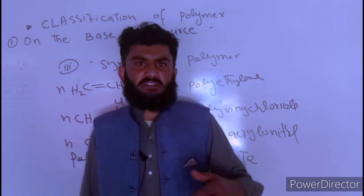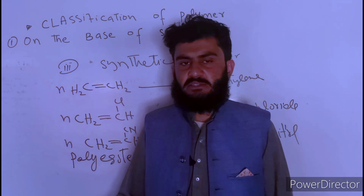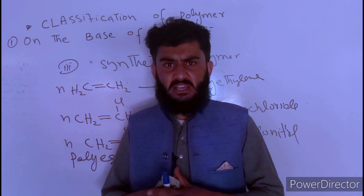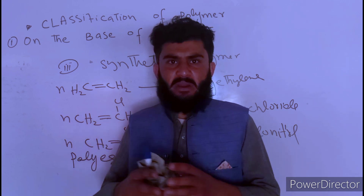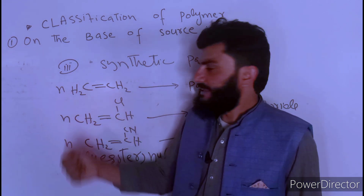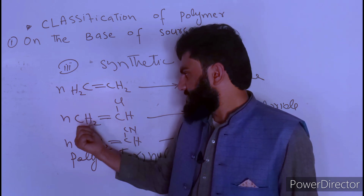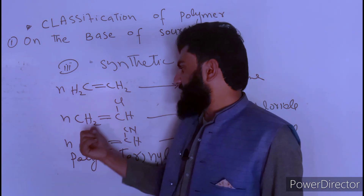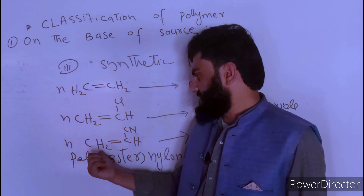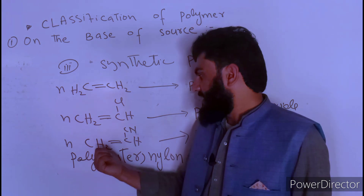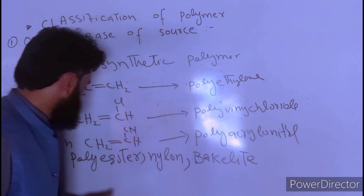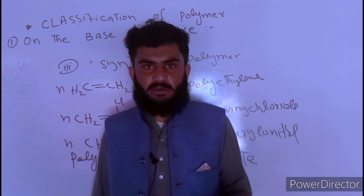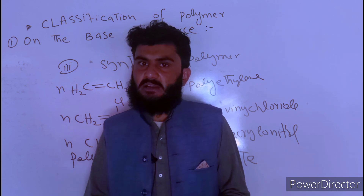The third classification is synthetic polymers — those obtained artificially by human beings combining monomers, such as ethylene to polyethylene, vinyl chloride to PVC, acrylonitrile to polyacrylonitrile, and polyester. In the next lecture, we will discuss another classification.